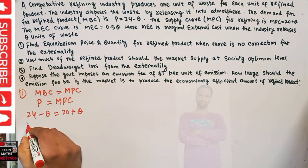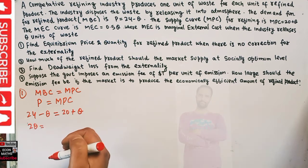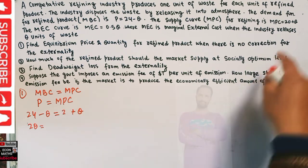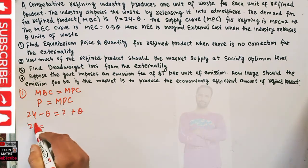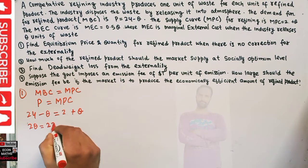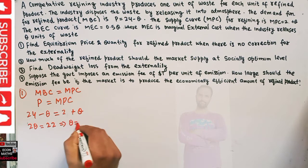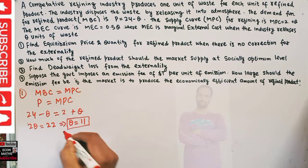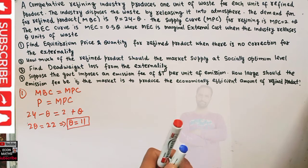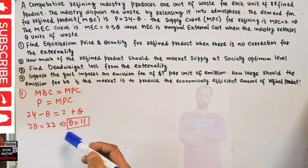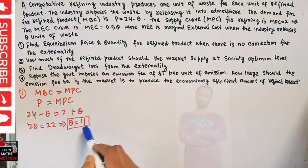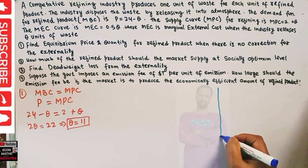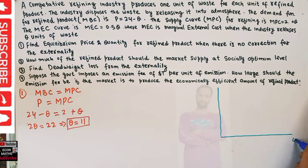Solving for Q: 24 minus Q = 2 plus Q, so 2Q = 22, which gives Q = 11. This is the free market equilibrium — also called the uncorrected equilibrium — at which we produce Q = 11 units of refined product.